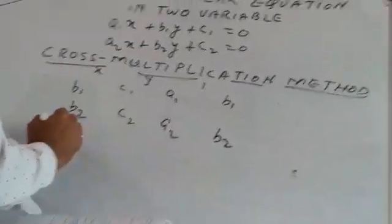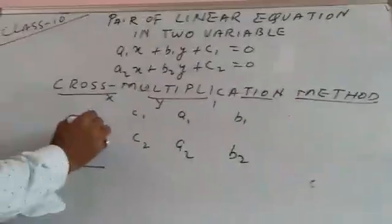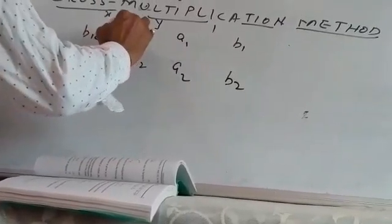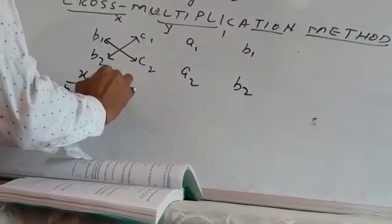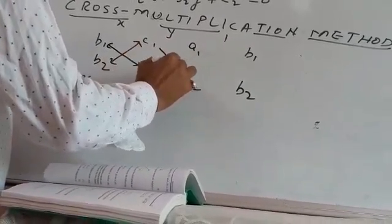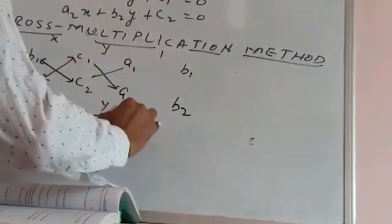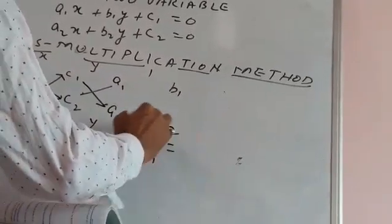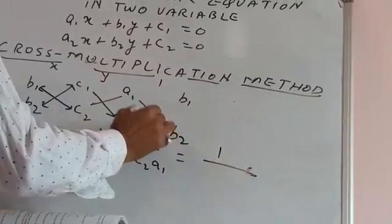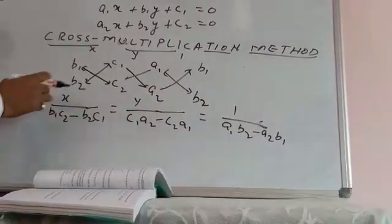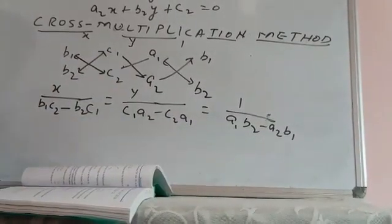Now you can design the formula. x upon — we always start from here, and that's why this is called cross multiplication — this gives (b1·c2 − b2·c1). This equals y upon (c1·a2 − c2·a1). And the last is 1 upon (a1·b2 − a2·b1).